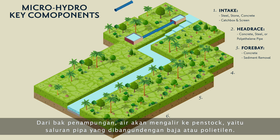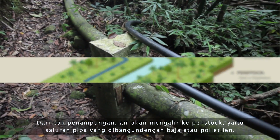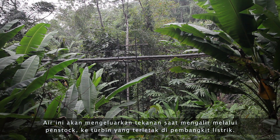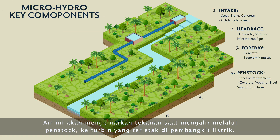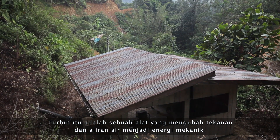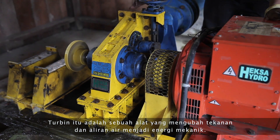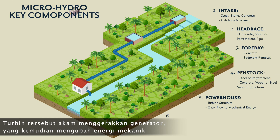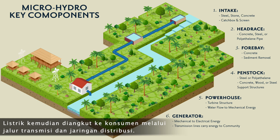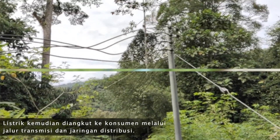From the forebay, water travels into the penstock, which is a pipeline that can be constructed with steel or polyethylene, with concrete, wood, and/or steel support structures. Water builds up pressure as it travels through the penstock into the turbine located at the powerhouse. The powerhouse is where a turbine converts the pressure and flow of water into mechanical energy. The turbine powers a generator, which then converts the mechanical energy into electrical energy. Electricity is then transported to consumers via a transmission and distribution line.